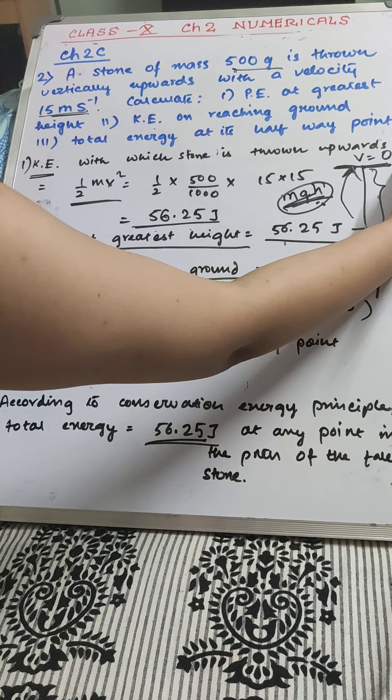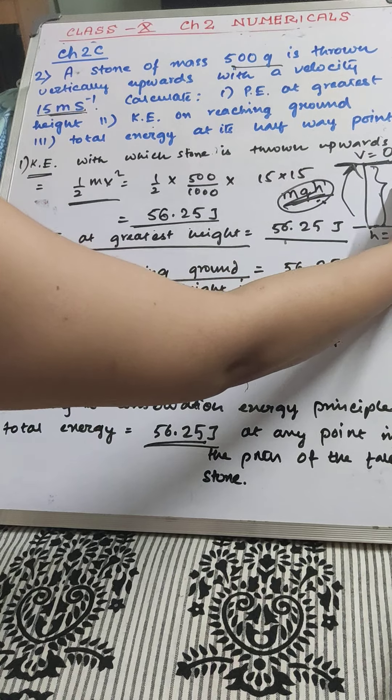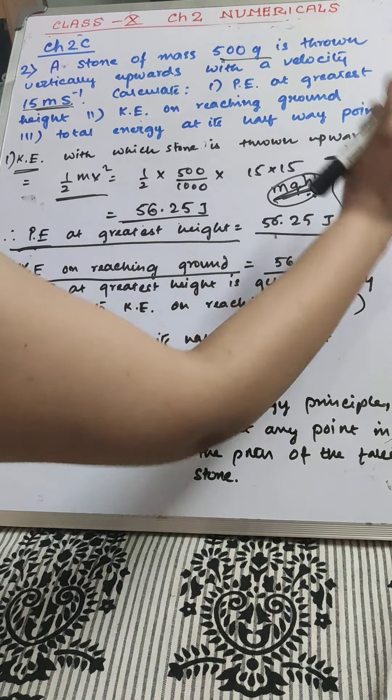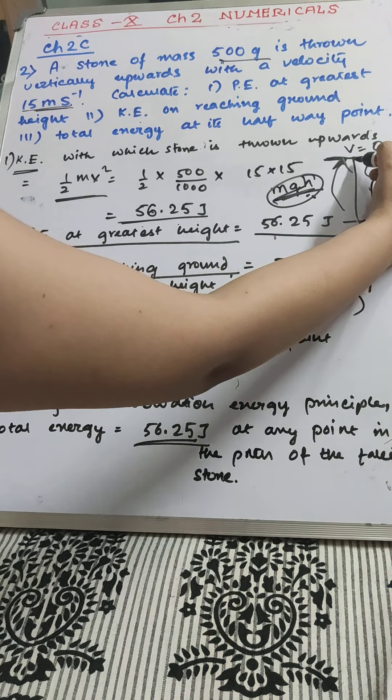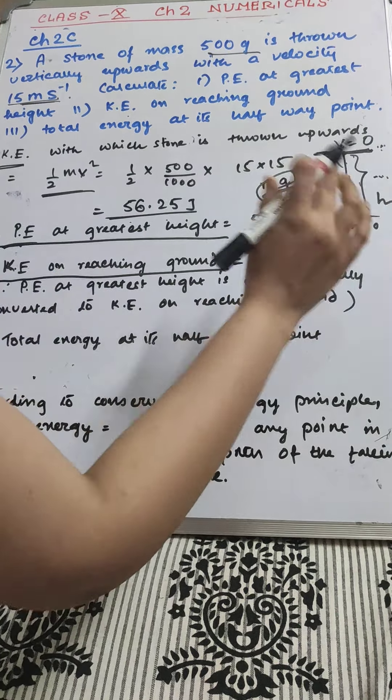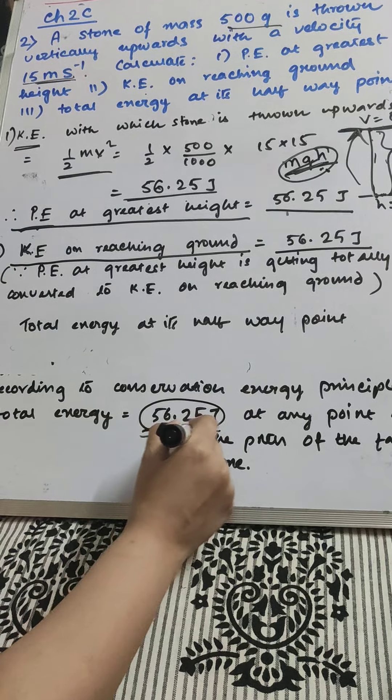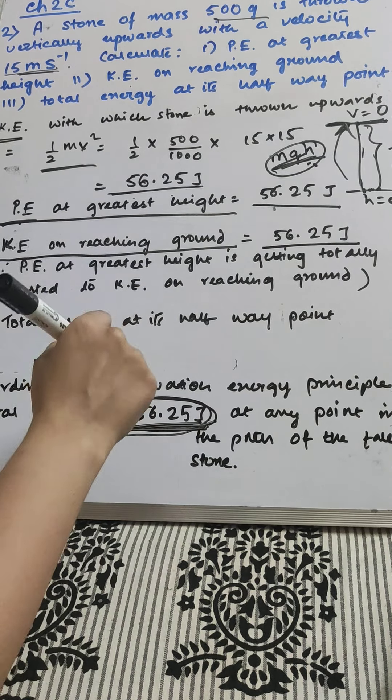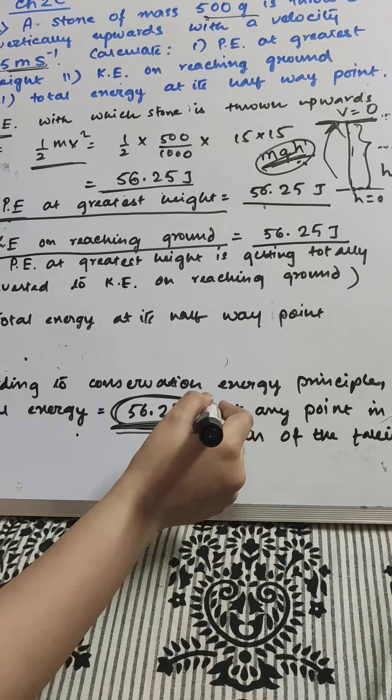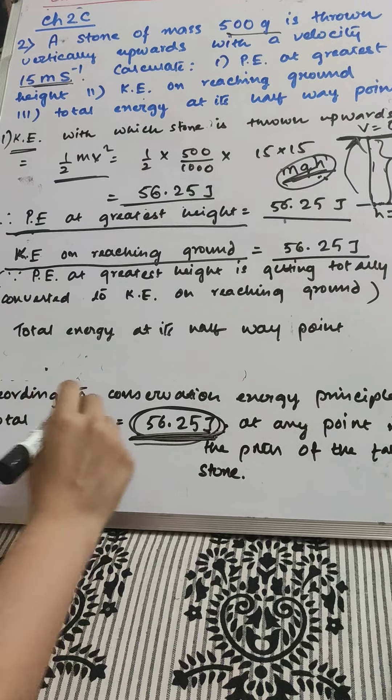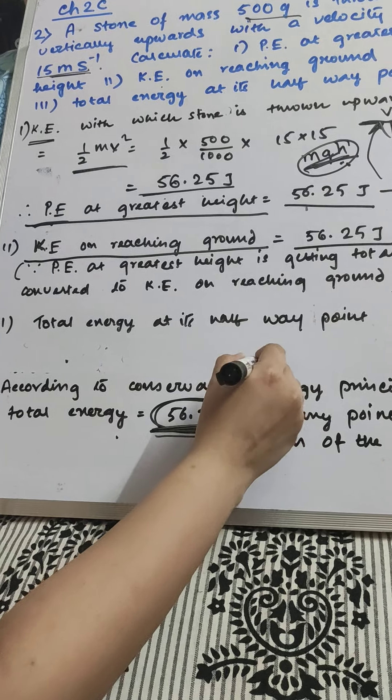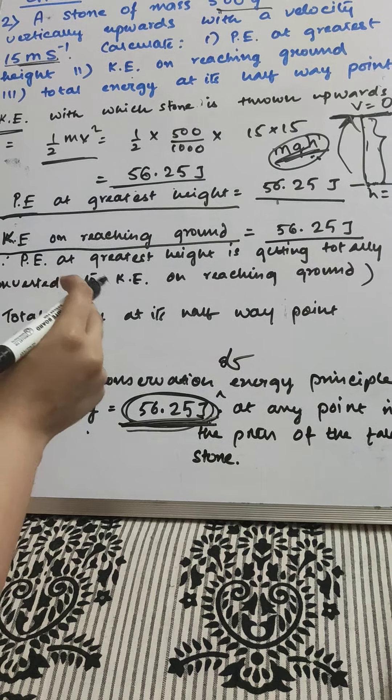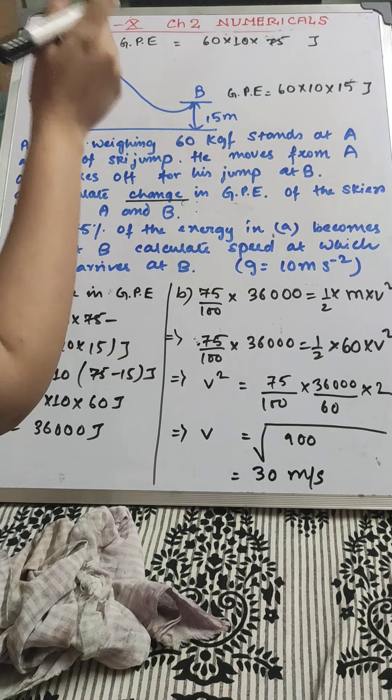At this point, if potential energy is 56.25 joule and kinetic energy is 0, at some other point, potential energy will be some value and kinetic energy will also have some value. But, whatever be the value, at all instance of time, total energy will be constant. It cannot exceed this value. According to the conservation of energy principle, we can say that total energy is 56.25 joule at any point when the stone is falling down.